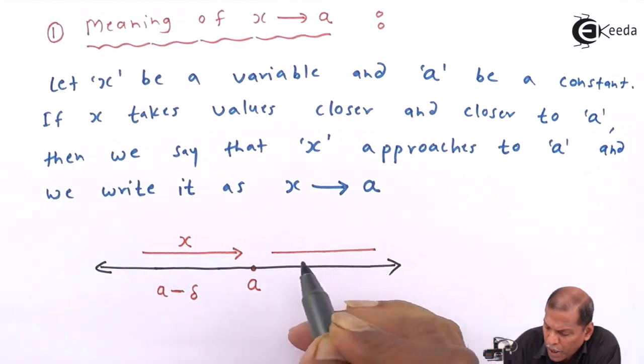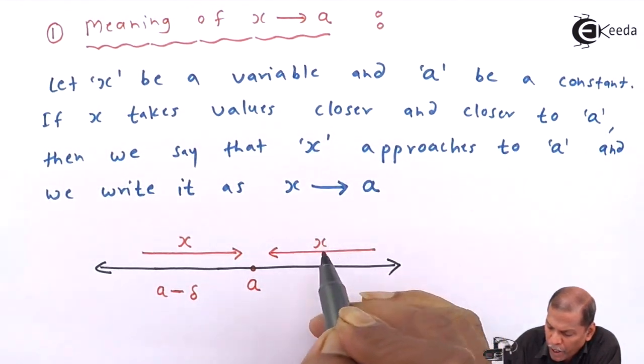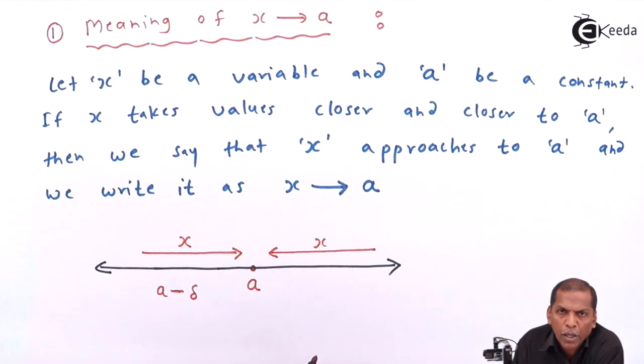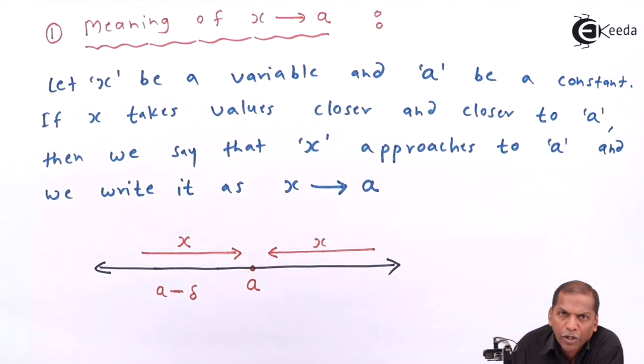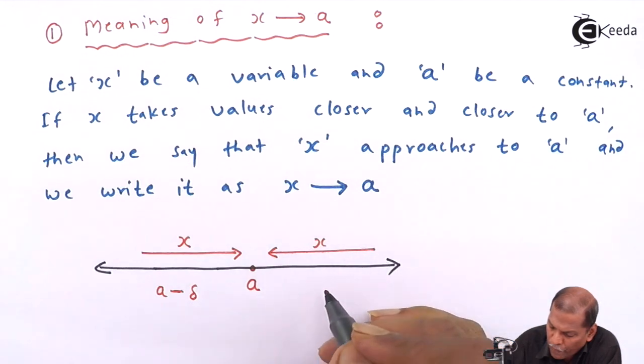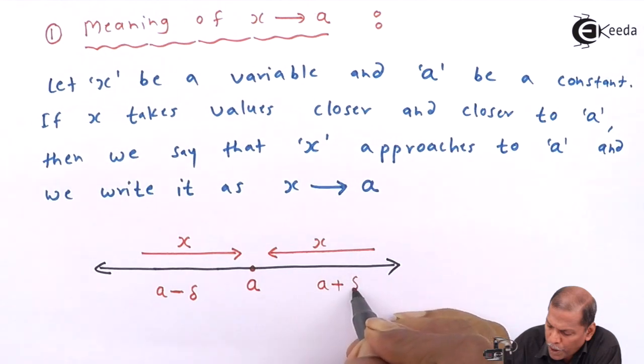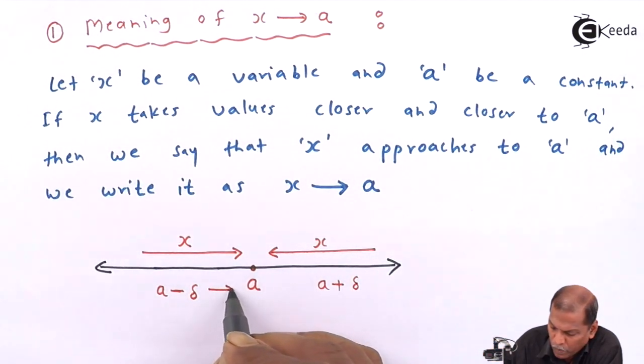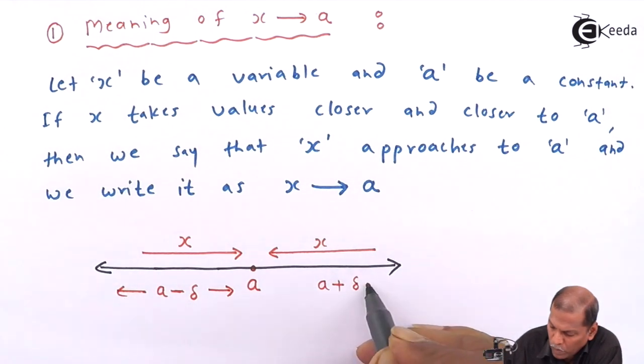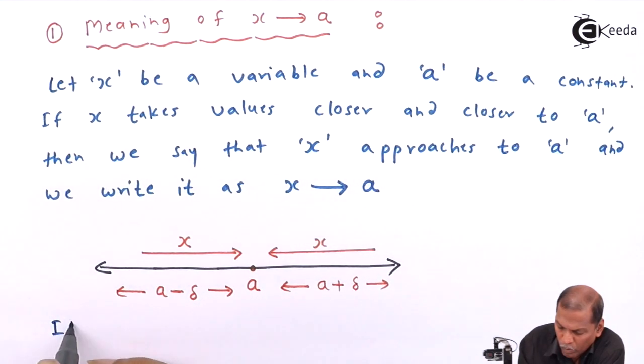And then in case number two, we consider that x approaches from right to a, which means in that case x takes value greater than a. And that value here we represent as a plus delta. So it involves two cases.